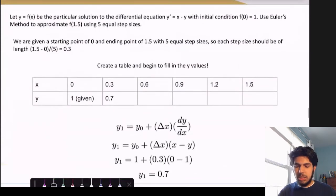So we'll let y of x be the particular solution to this differential equation here, with initial condition f of 0 equals 1. And just with this, our goal is to approximate what f of 1.5 is using five equal step sizes. So first we want to find what our step sizes are. So we're going to start at our initial condition, and this is our final.